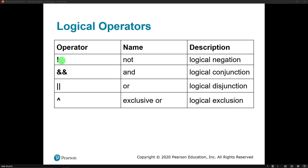The first one we discussed a couple videos ago — I didn't go into too much detail — but we talked about the exclamation point, which is the NOT operator, and that is a logical negation. When we want to negate the outcome of a Boolean expression, we can throw the NOT operator in front of it, and that changes a true to false or a false to true.